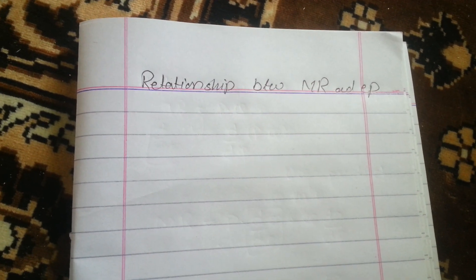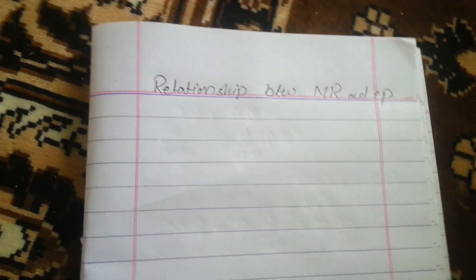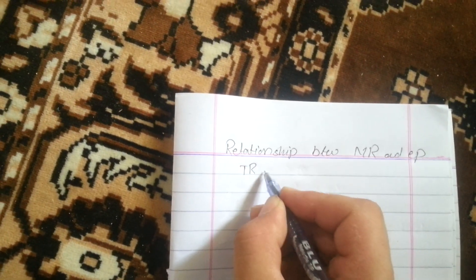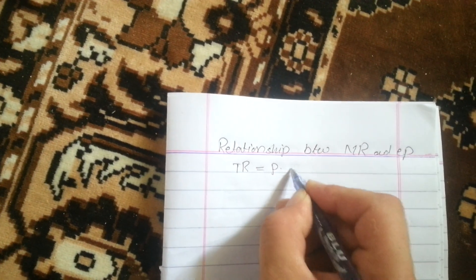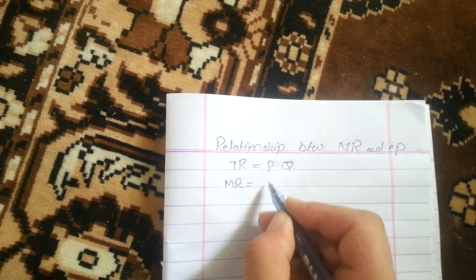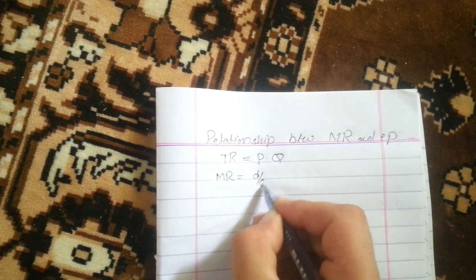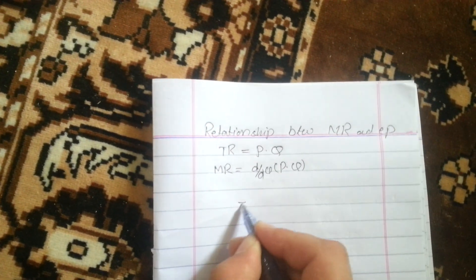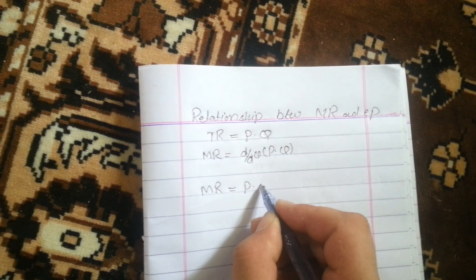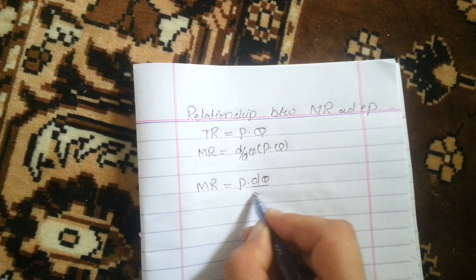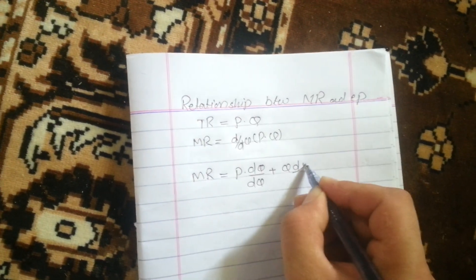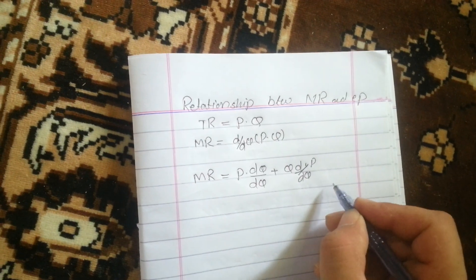We start with the relationship between marginal revenue and price. We begin from total revenue, which is the product of price and quantity. Differentiating with respect to Q gives us marginal revenue. Using the product rule, we differentiate P into Q with respect to Q.